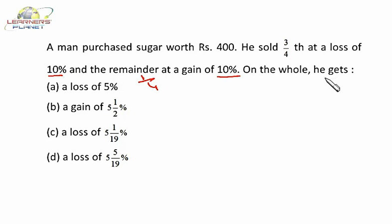Okay, now some quantity is being sold at 10% profit and some quantity is being sold at 10% loss. So in case of loss we put a minus sign over here.